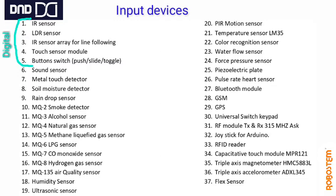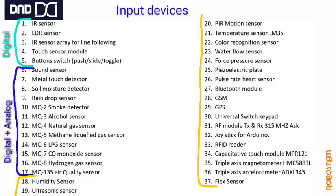Among the input devices, sensors 1 to 5 are digital only: IR, LDR, IR line follower, touch sensor, and buttons. Sensors 6 to 17 are both digital and analog — they can be used as either at the same time. Sensors 18 to 37 are analog sensors only. It is important to understand the difference between analog and digital sensors.